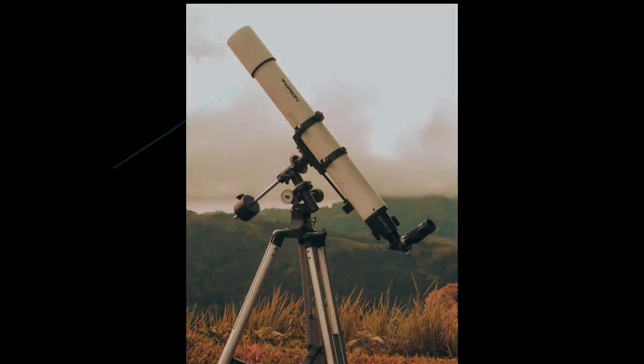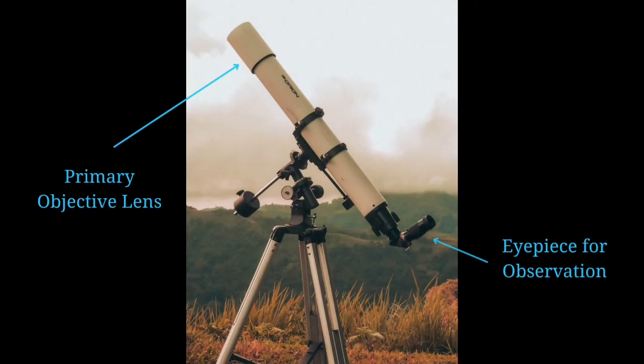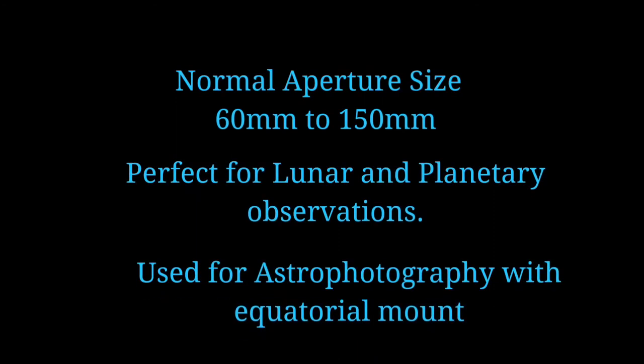Refractor Telescopes. Refractor telescopes are the most used by beginners in their backyards. In this type of telescope, the primary objective lens is at the top of the telescope and the eyepiece is at the end of the telescope tube. Aperture sizes range between 60mm to 150mm. Refractors are the perfect telescope for lunar observations and planet observers.